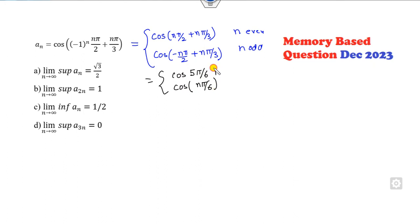Which is I can say cos(5π/6) and this is cos(nπ/6) - it is even and odd. Now look at that: limit supremum is here - that is the wrong answer. Why? Because whatever the limit of the supremum and infimum always lies between -1 to +1.